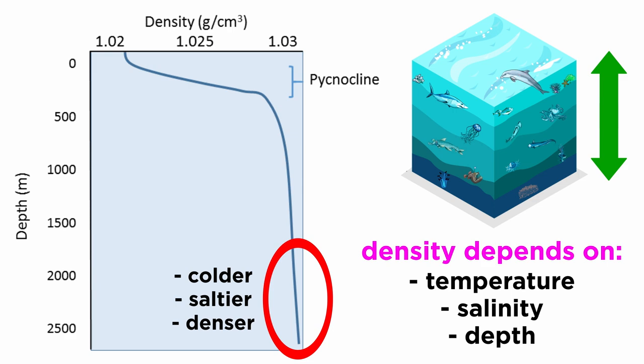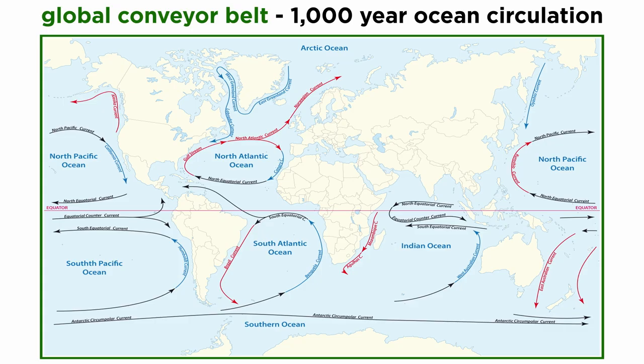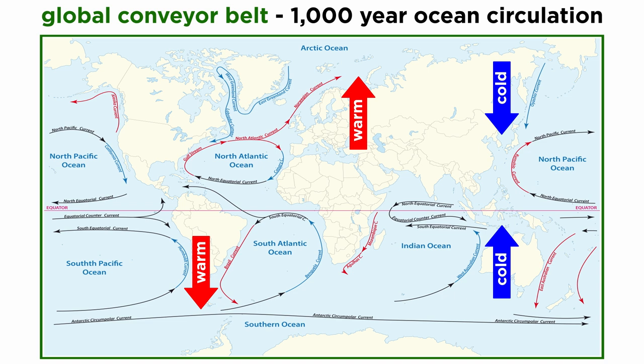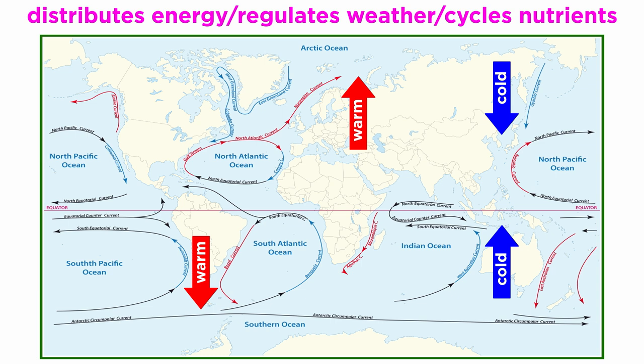This global scale circulation system is called the global conveyor belt, which circulates the globe in a 1,000-year cycle. While warm surface currents carry less dense water away from the equator and towards the poles, cold deep ocean currents carry dense water away from the poles and towards the equator. The ocean's global circulation system plays a key role in distributing heat energy, regulating weather and climate, and cycling vital nutrients and gases to organisms that call its waters home.